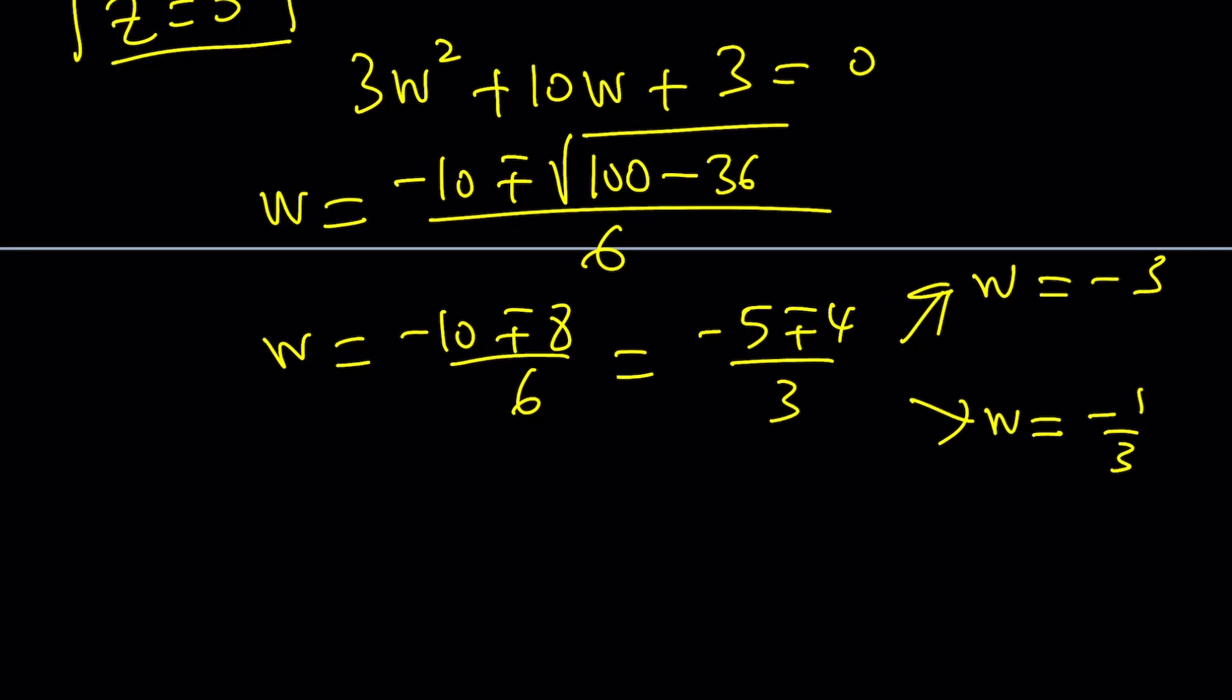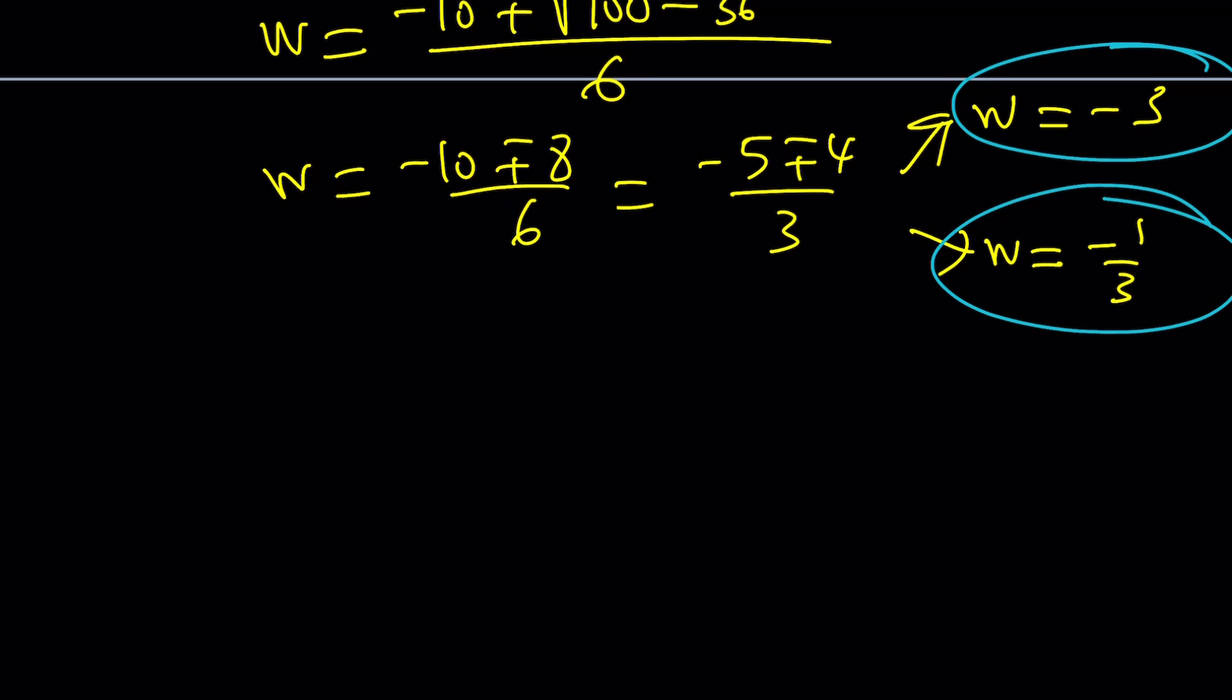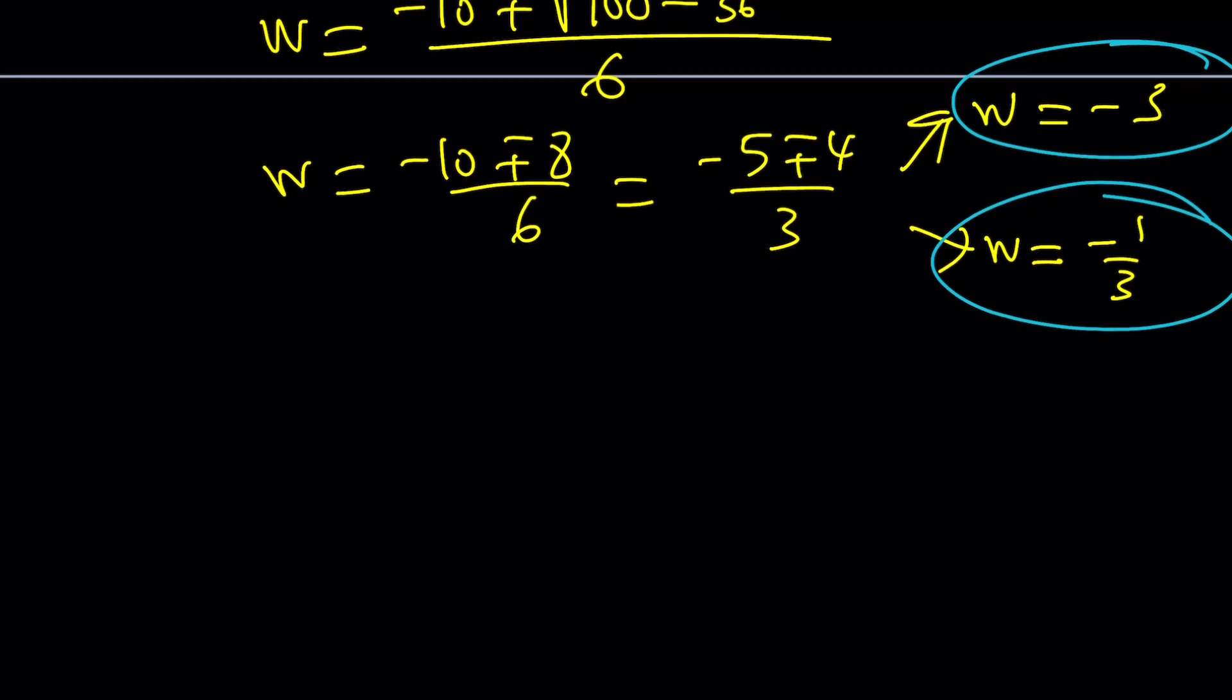We can split these up into W equals negative 3 and W equals negative 1 third. They're both negative. You probably knew that because the sum is negative. The product is positive. From Vieta's formulas. So those are the W values but remember W is Z squared. So we need to set these equal to Z squared. Z squared equals negative 3 because W is Z squared. From here we get two solutions. Z is equal to square root of 3i or Z is equal to negative square root of 3i.